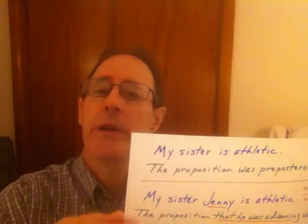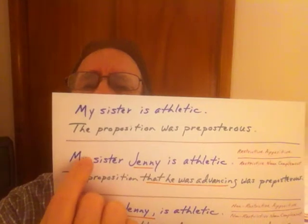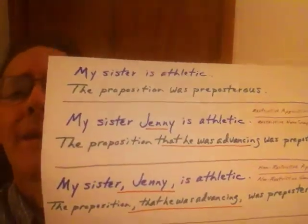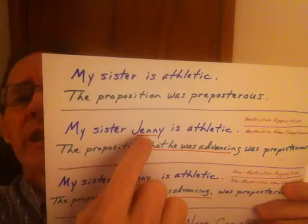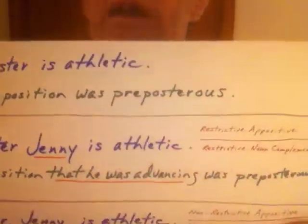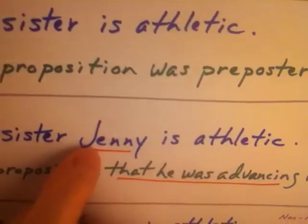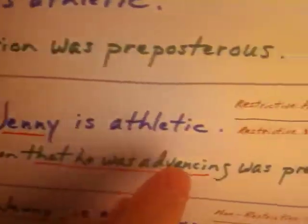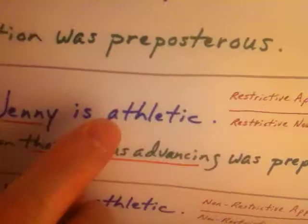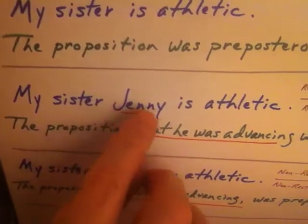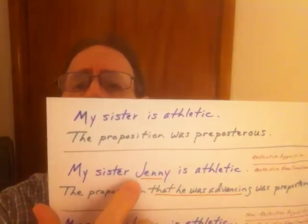We know that my sister's name is Jenny. In grammar — in contemporary grammar — they will often refer to this word "Jenny," which renames the word "sister," as a restrictive appositive. But what you're saying is "my sister Jenny is athletic" — we don't know if I have other sisters. We do know that I have a sister named Jenny, but that's pretty much all we know.